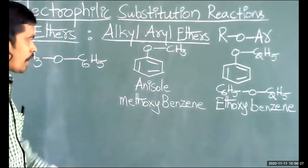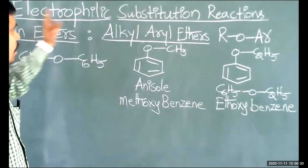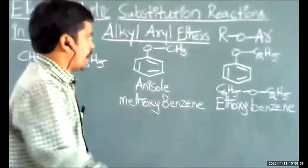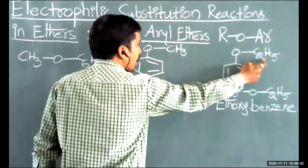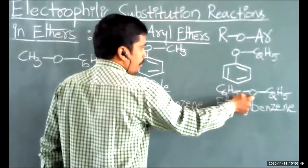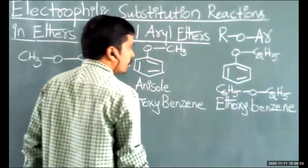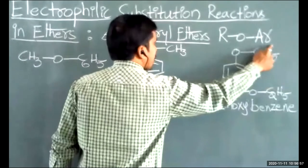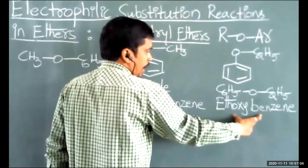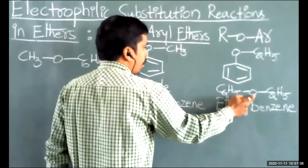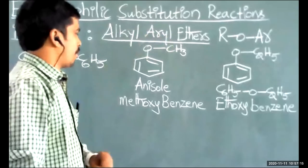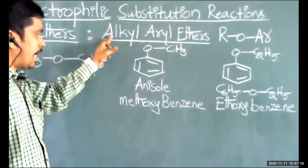Today we discuss electrophilic substitution reactions of anisole. Another example of an alkyl aryl ether uses ethyl (C2H5) as the alkyl group, giving C6H5–O–C2H5. The C2H5O group is called ethoxy (ethyl + oxy), so the IUPAC name is ethoxybenzene. These two are simple examples of alkyl aryl ethers.